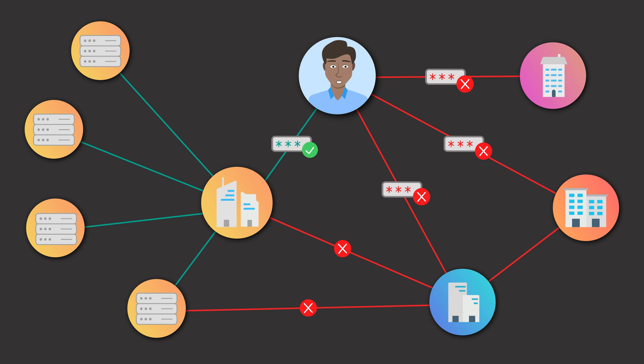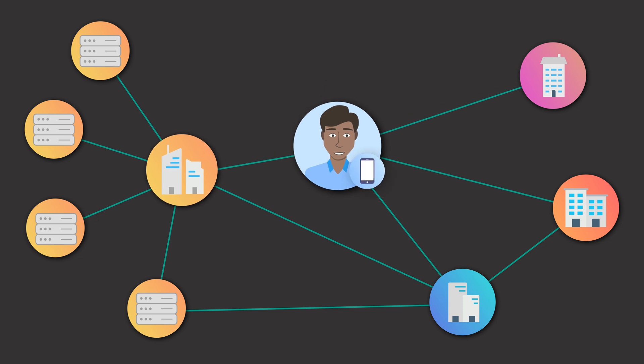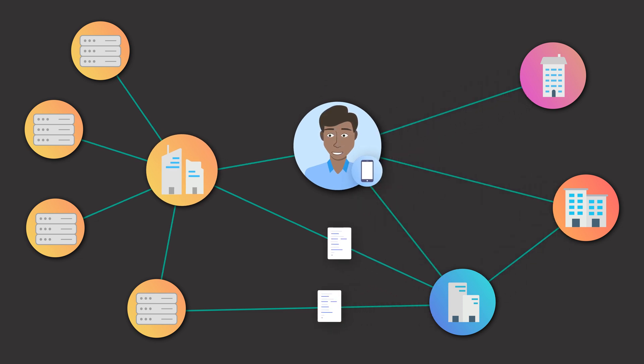So this is the promise of decentralised identity — we now have new standards for expressing, representing, and transferring data between different domains, enabling more portable identities. The key thing is that by making people have their own credentials that they can control and own themselves, it also allows them to use them across different domains. And as long as everyone's using a standardised data model, that's much easier.